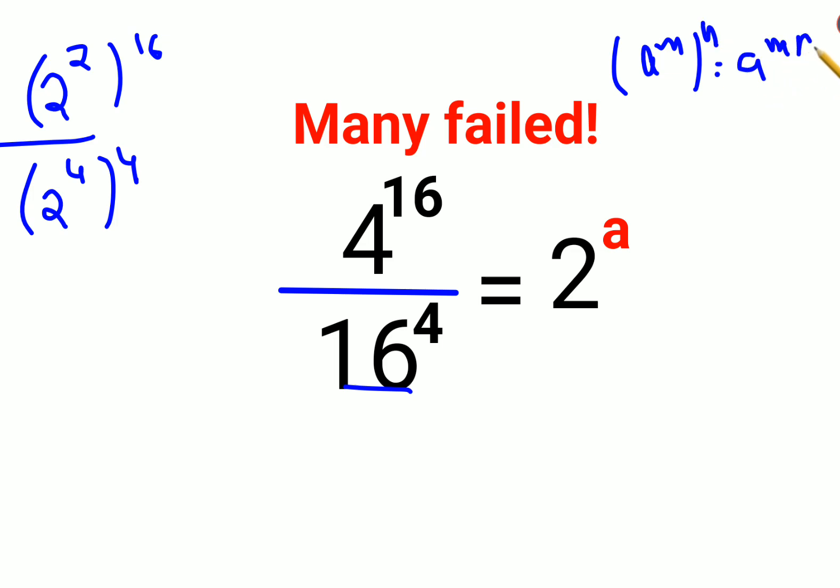So this will be 2 raised to 16 times 2 is 32, upon 2 raised to 4 times 4 is 16. Now when you have the base to be the same and indices to be different, especially in the numerator and denominator.